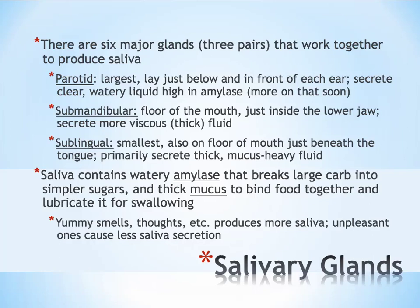Part of the process of chewing involves the production and use of saliva. There are many glands in the mouth that help to produce saliva, but we're just going to talk about the six major glands.